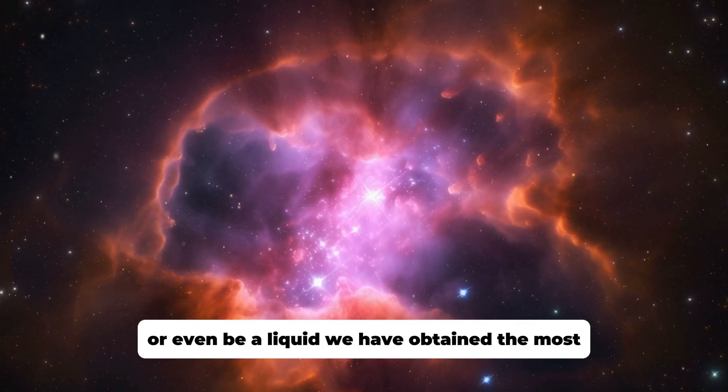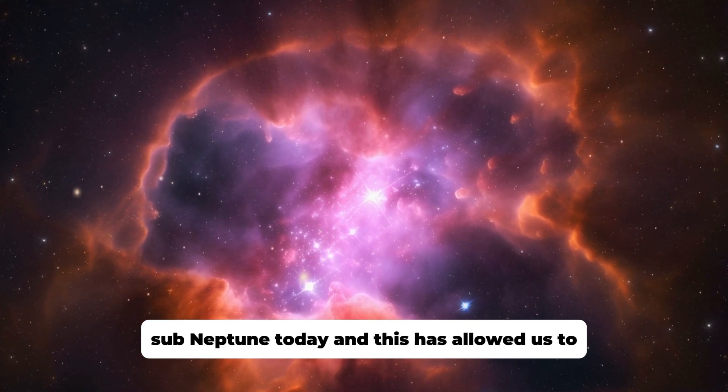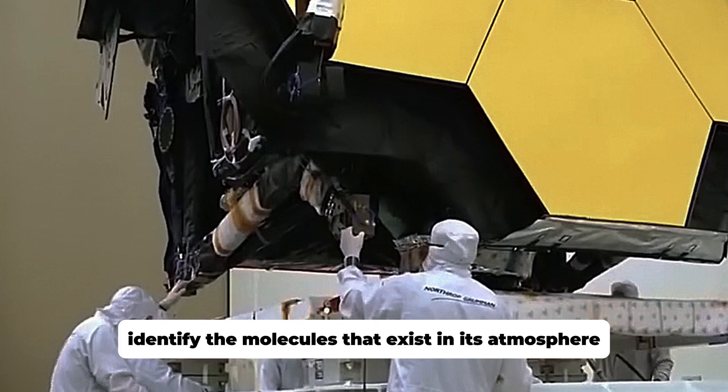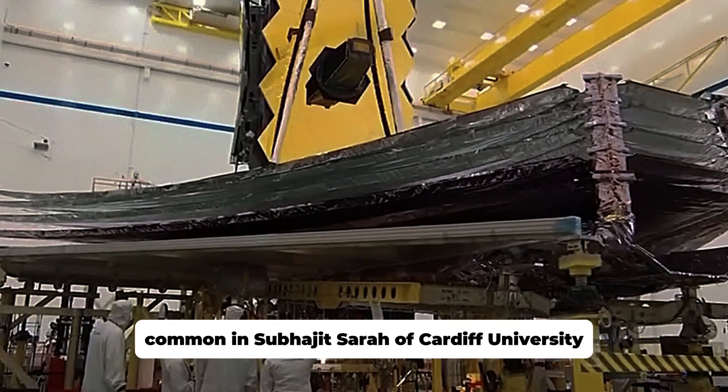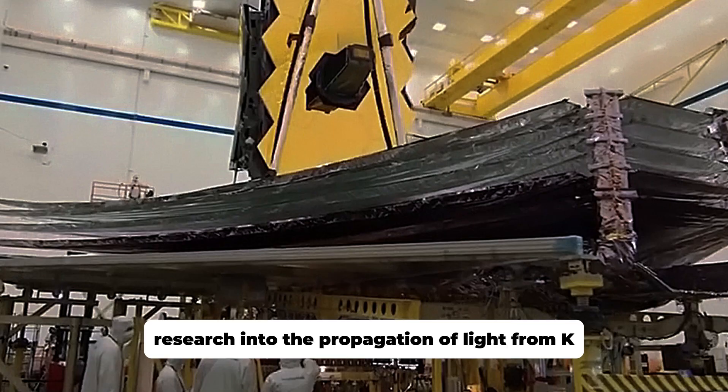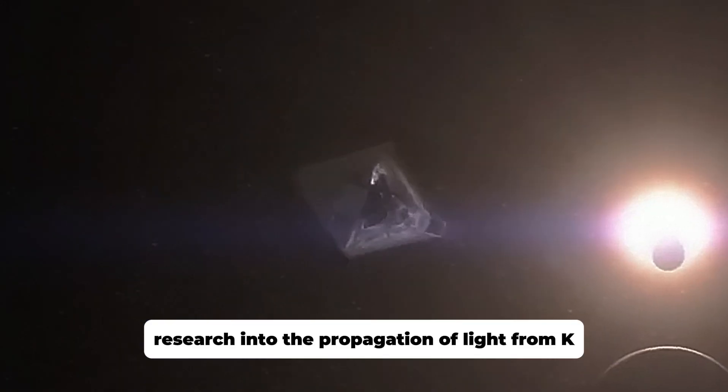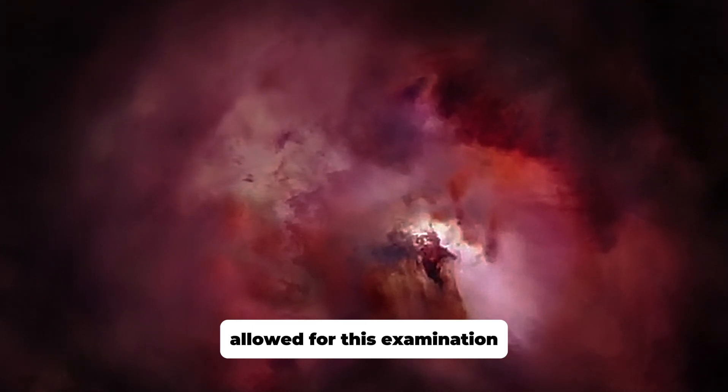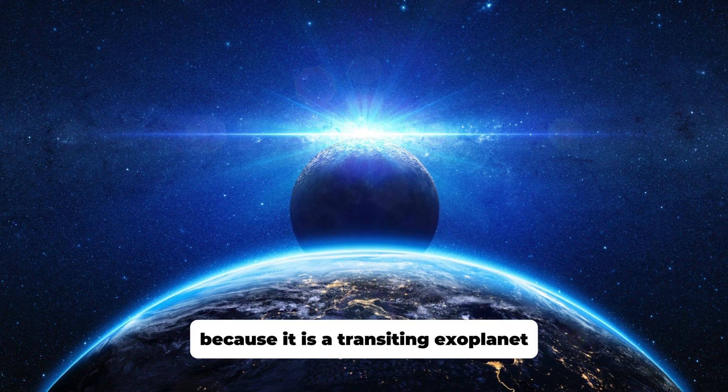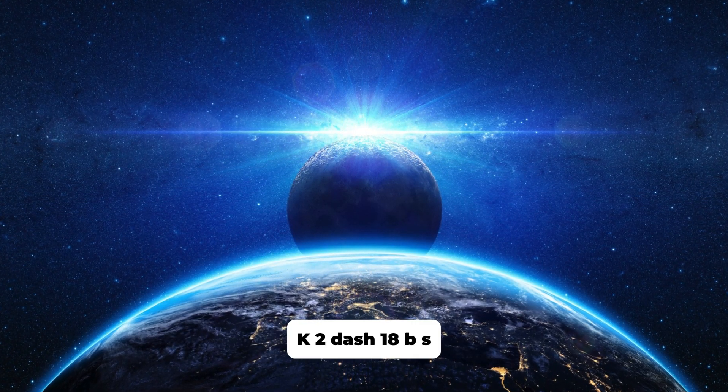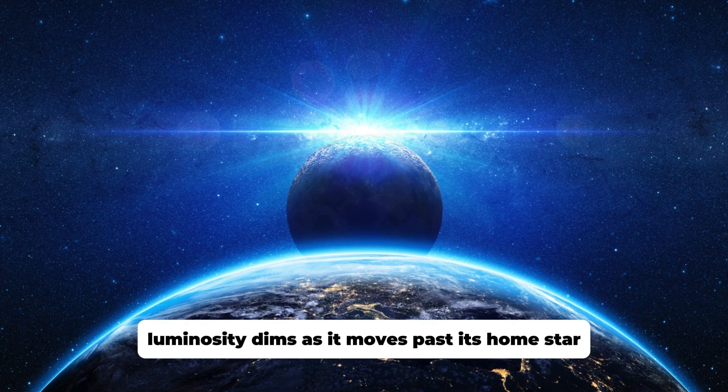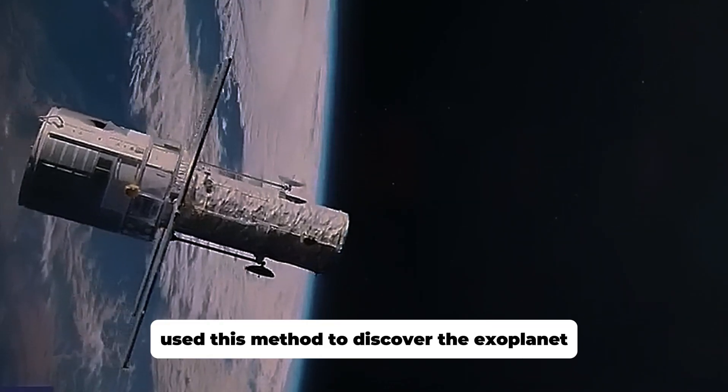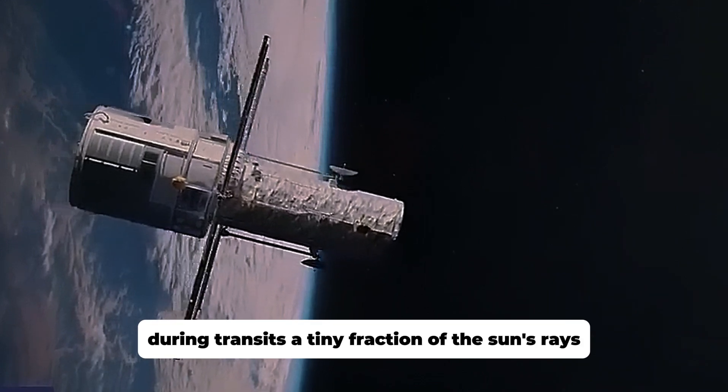We have obtained the most detailed spectrum of a habitable zone sub-Neptune to date, and this has allowed us to identify the molecules that exist in its atmosphere, commented Subhajit Sarkar of Cardiff University. Research into the propagation of light from K2-18b's parent star through the exoplanet's atmosphere allowed for this examination, because it is a transiting exoplanet. K2-18b's luminosity dims as it moves past its home star. In 2015, NASA's K2 mission used this method to discover the exoplanet during transits.